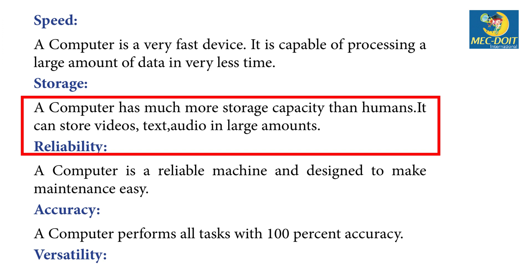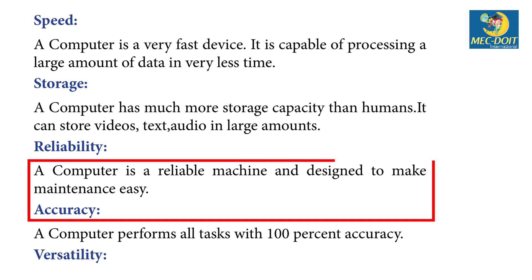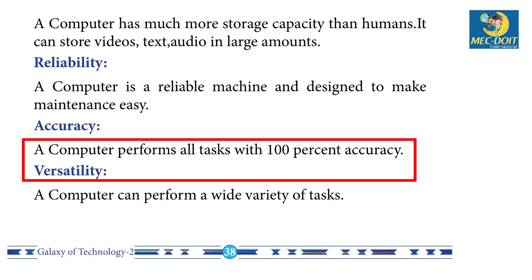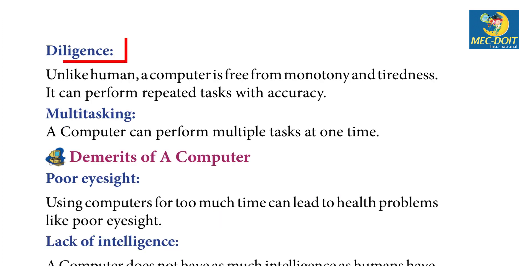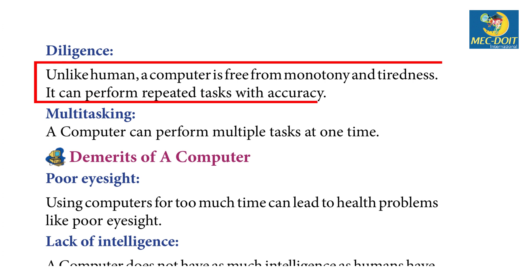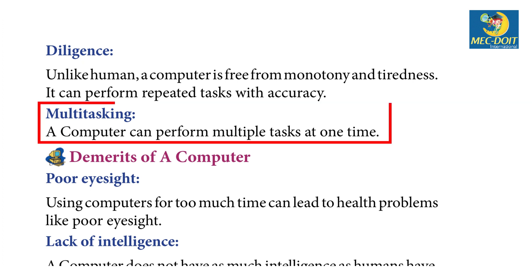Reliability — a computer is a reliable machine and designed to make maintenance easy. Accuracy — a computer performs all tasks with 100% accuracy. Versatility — a computer can perform a wide variety of tasks. Diligence — unlike humans, a computer is free from monotony and tiredness; it can perform repeated tasks with accuracy. Multi-tasking — a computer can perform multiple tasks at one time.